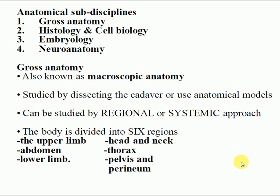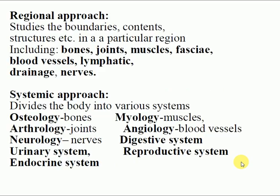Anatomy can be studied by two approaches: regional or systematic. By the regional approach, the body is divided into six major regions: head and neck, upper limbs, thorax, abdomen, pelvis and perineum, and lower limb. By regional approach, we study the boundaries, contents, and structures in each particular region — for example, the boundaries of the abdomen, its contents, and what structures are present.